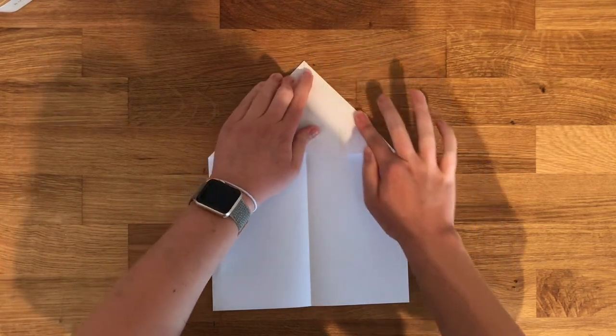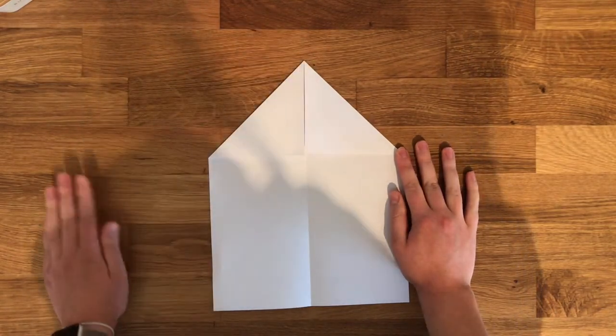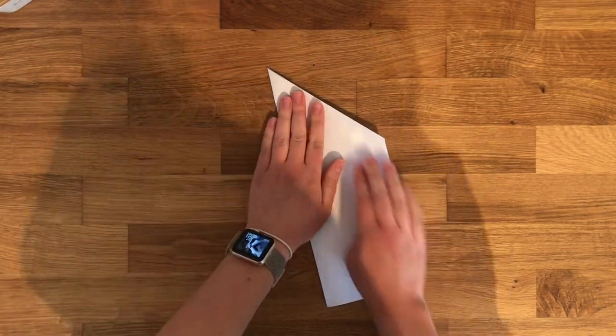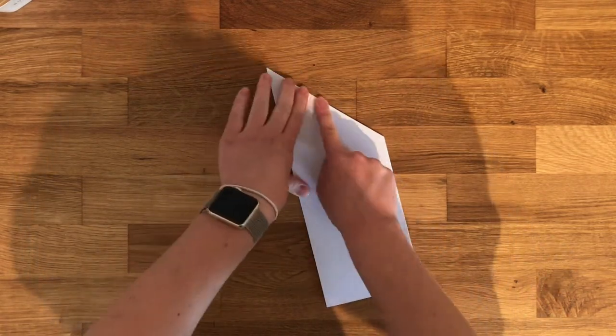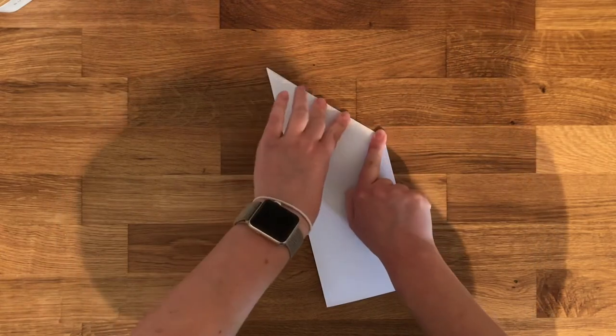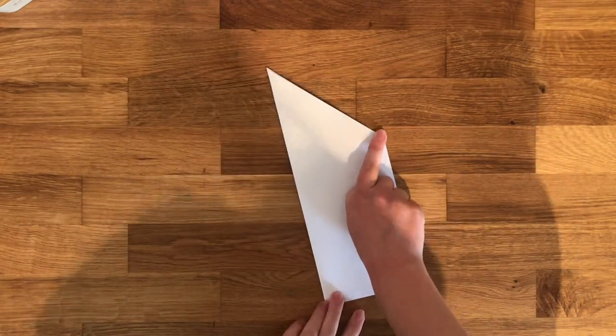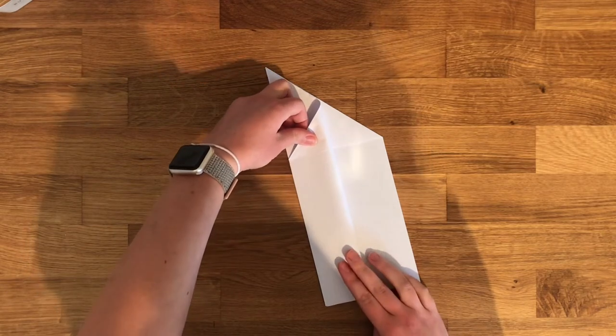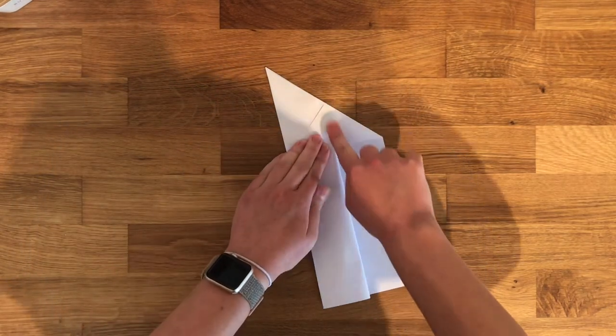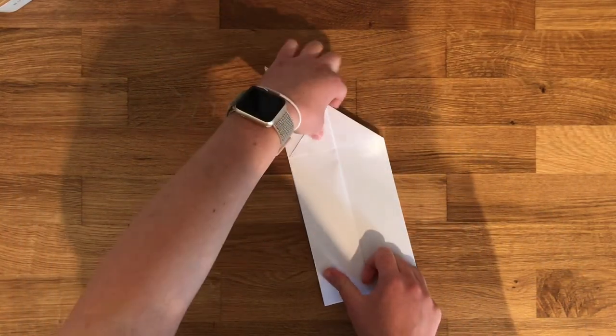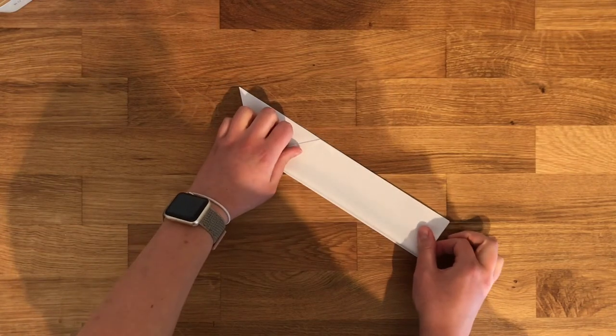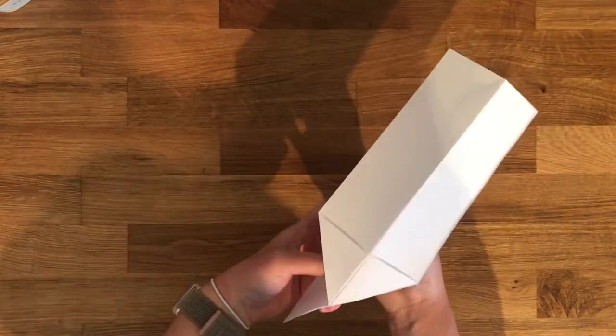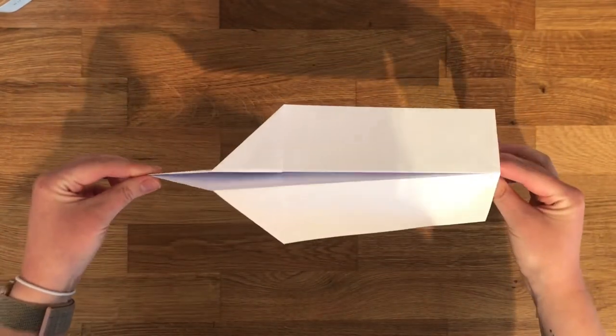Fold it in half hot dog style again, be sure to press down all those creases. Lastly, you're going to fold the wings down to meet the edges of the bottom of the plane, just like that. You've got yourself a classic paper airplane.